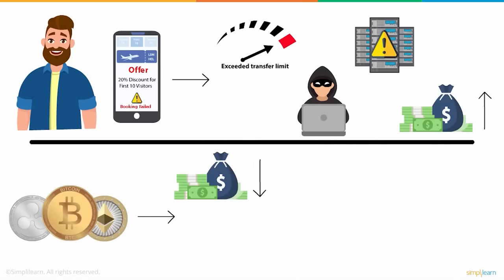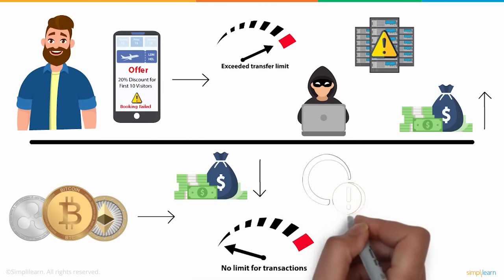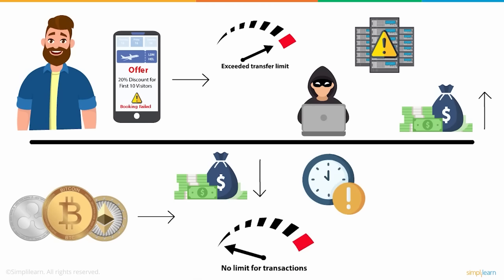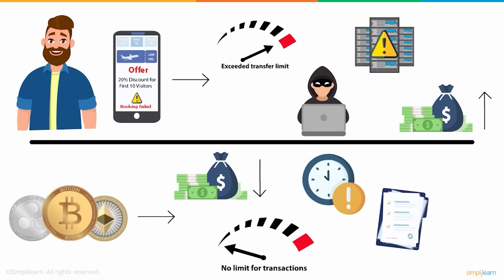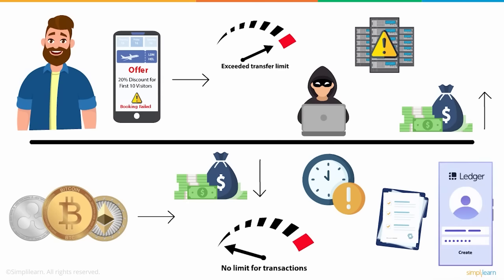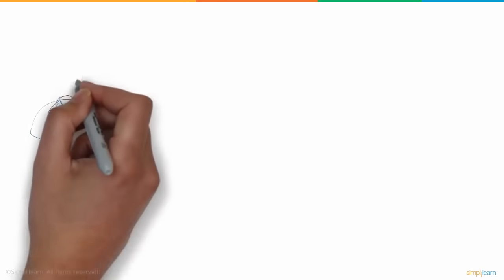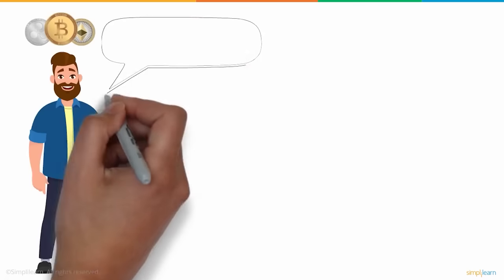Cryptocurrency charges almost no or very low transaction cost. There is no limit for making transactions — in fact, you have 24/7 access to your money, with no extra delay or charges on international transactions. And the best part is that anybody can use cryptocurrency without the hassles of paperwork; all you need to do is create an account on any digital cryptocurrency wallet. This is what makes cryptocurrency different from other online payment options.